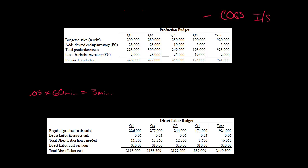Then we need to know what the cost per direct labor hour is. Let's assume that's $10 per direct labor hour. So we multiply the number of direct labor hours needed for that period — 11,300 — times the cost per hour of $10, which gives us $113,000 as the total cost of direct labor for quarter one.